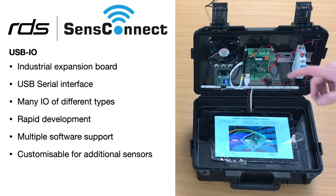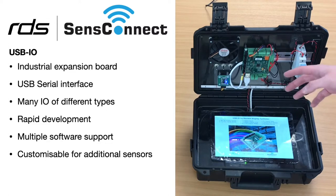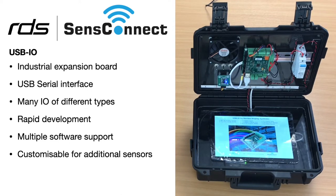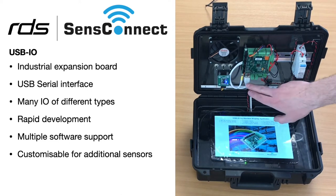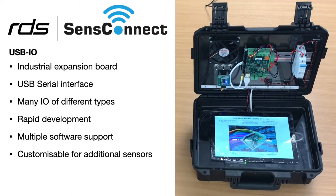As a brief introduction, the USB IO is an industrial input and output module that we developed so that it doesn't need any coding or firmware to use. You plug it into your computer with a USB port, connect it to your favorite application or software package, send it serial commands, and it sends serial commands back depending on what you requested.